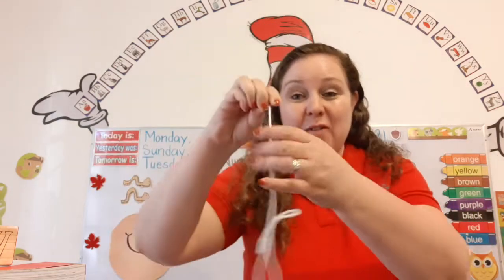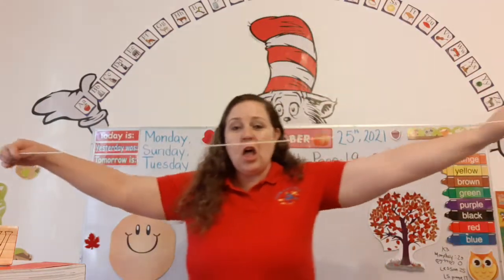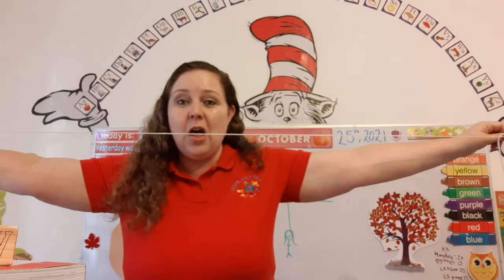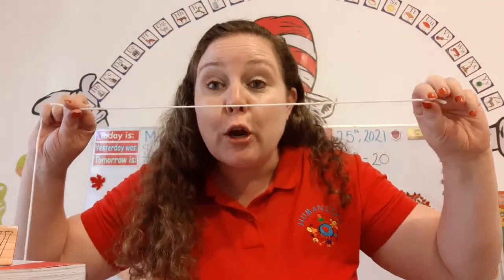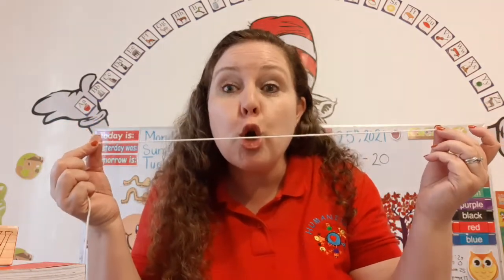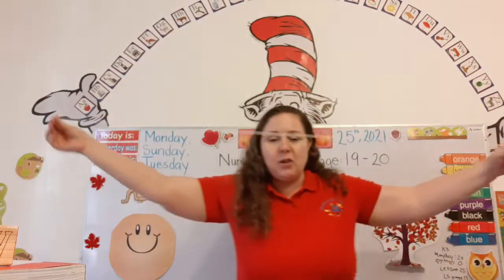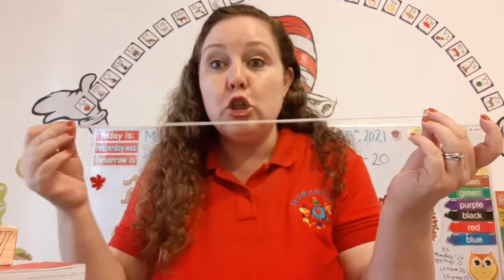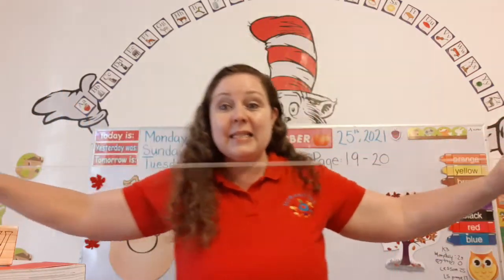Now, look what I have here. I have a piece of yarn. Look at this piece of yarn. Now we have another piece of yarn — that's longer! It's really long! Can you see it? It's long, long, long! This piece of yarn is shorter, and this piece of yarn is longer! Let's look at it one more time. This piece of yarn is shorter, and this piece of yarn is longer!